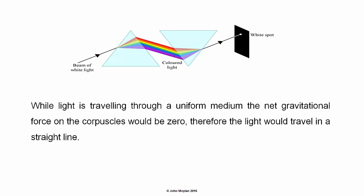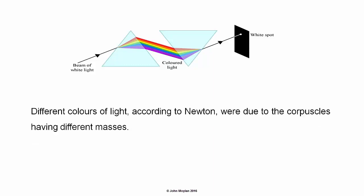While light is travelling through a uniform medium, the net gravitational force on the corpuscles would be zero. Therefore the light would travel in a straight line. Different colours of light, according to Newton, were due to corpuscles having different masses.